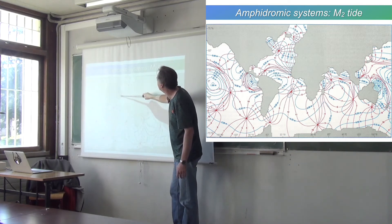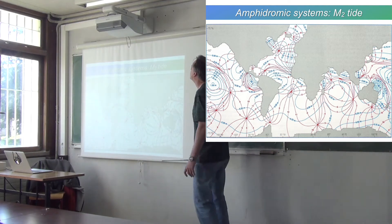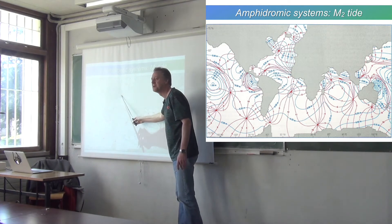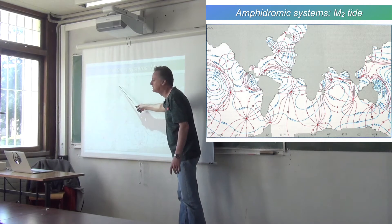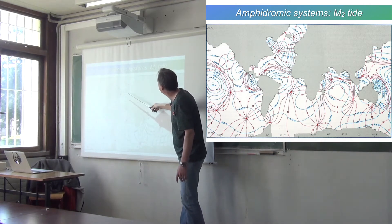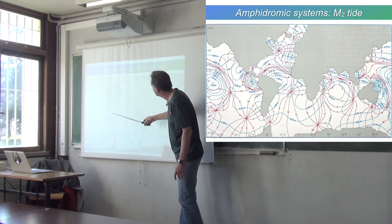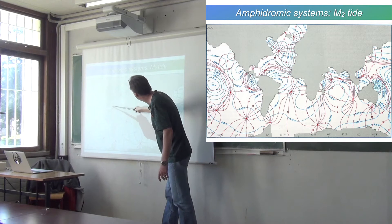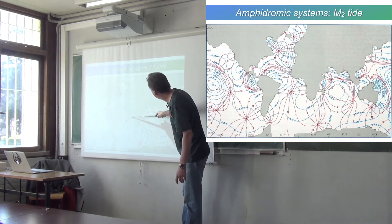So this is called the amphidromic system, and this is an amphidromic node here. And so you have the tide circulating around that node on the tidal period with its maximum amplitude, usually near the coast. Here's another one going around this way. Here, you've got one, two, three, four, also going around this way.